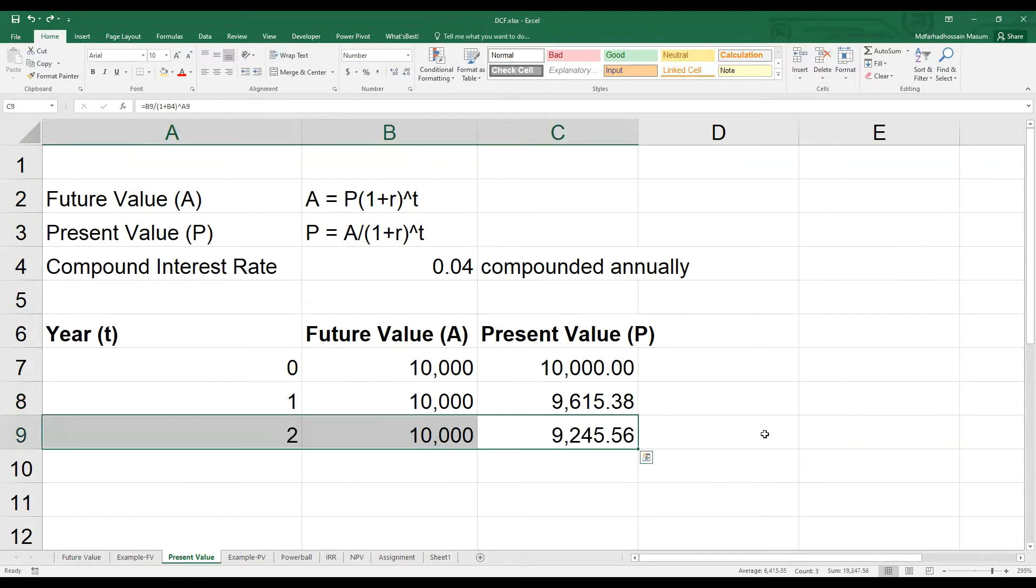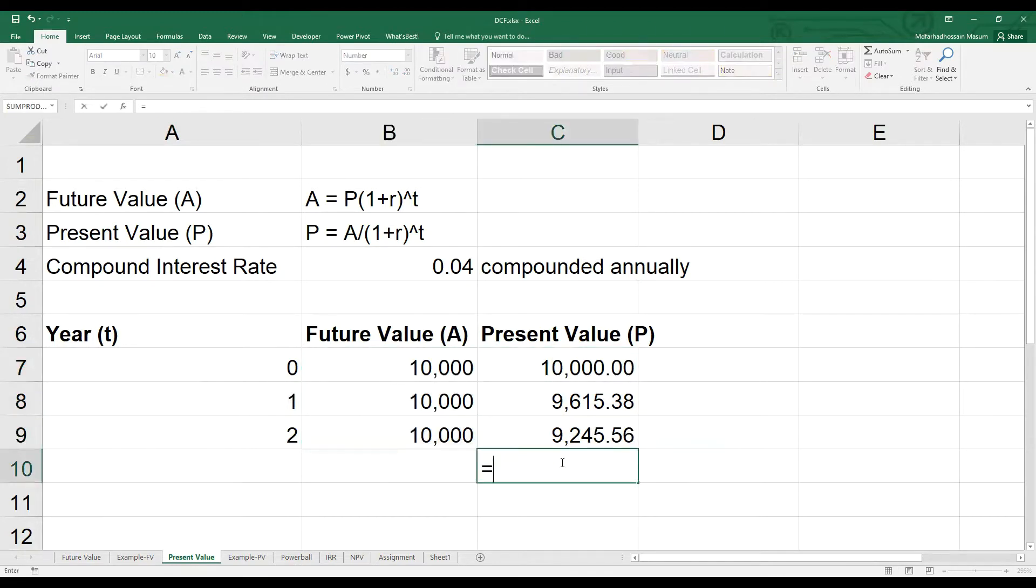But $10,000 a year from now is worth $9,615 this year, or $9,246 if it is coming from year 2. As t increases or further in the future the money is coming from, the less it is worth today. So if you give me $10,000 each year for 3 years, the present value of all amounts will be discounted to $28,861. That's why this process is called discounting.